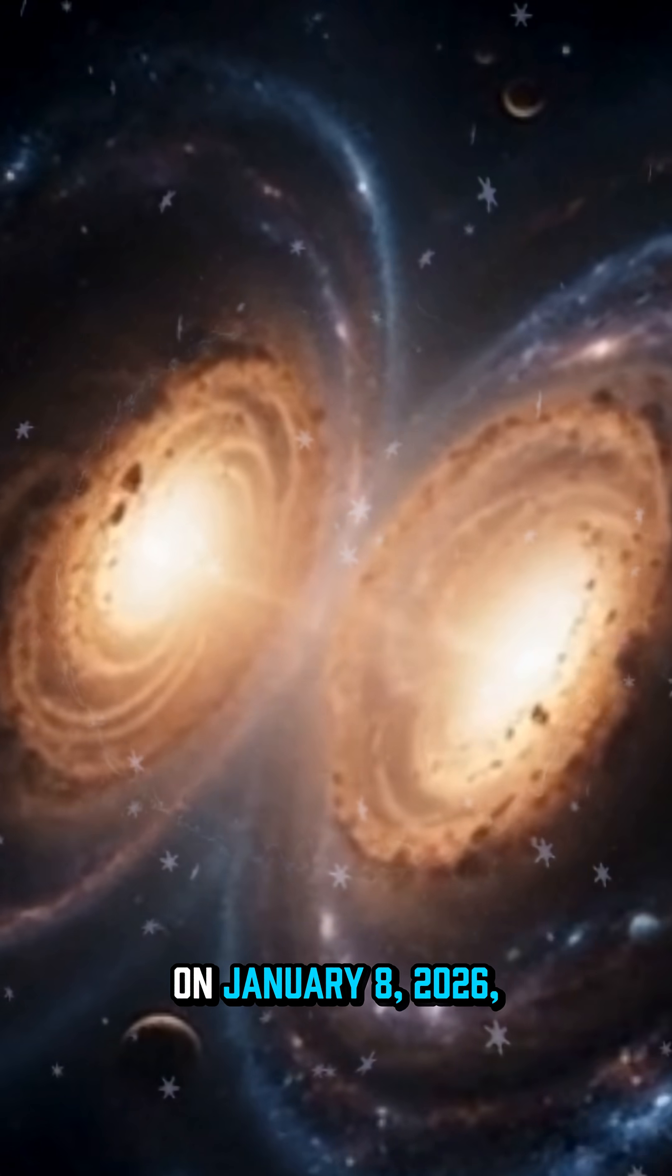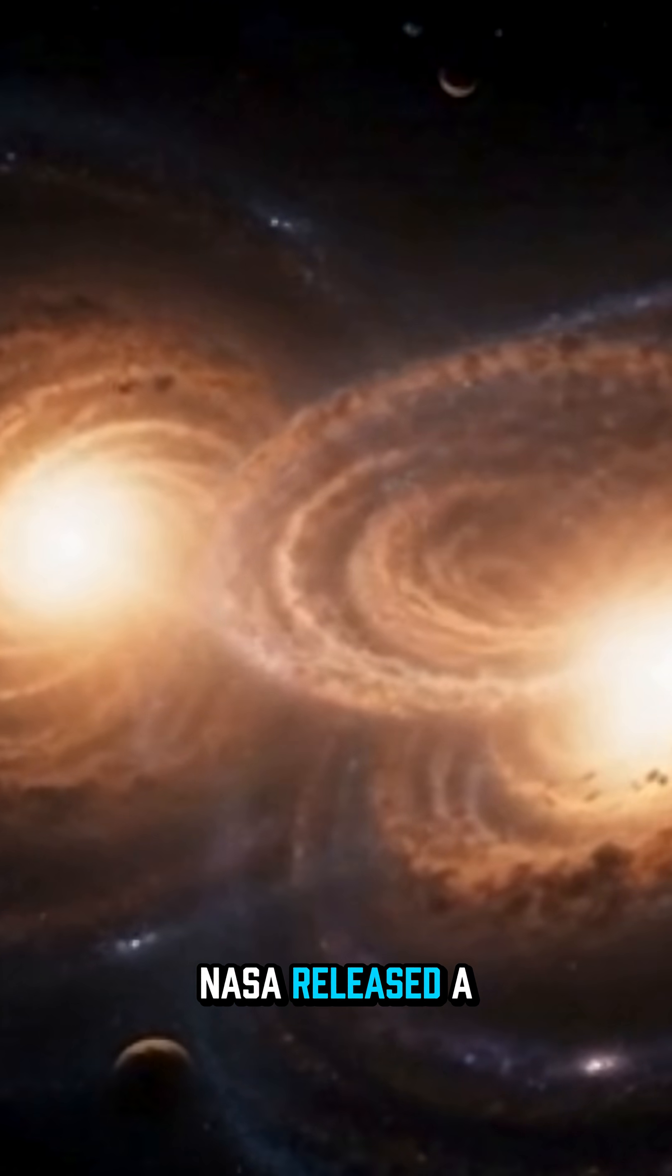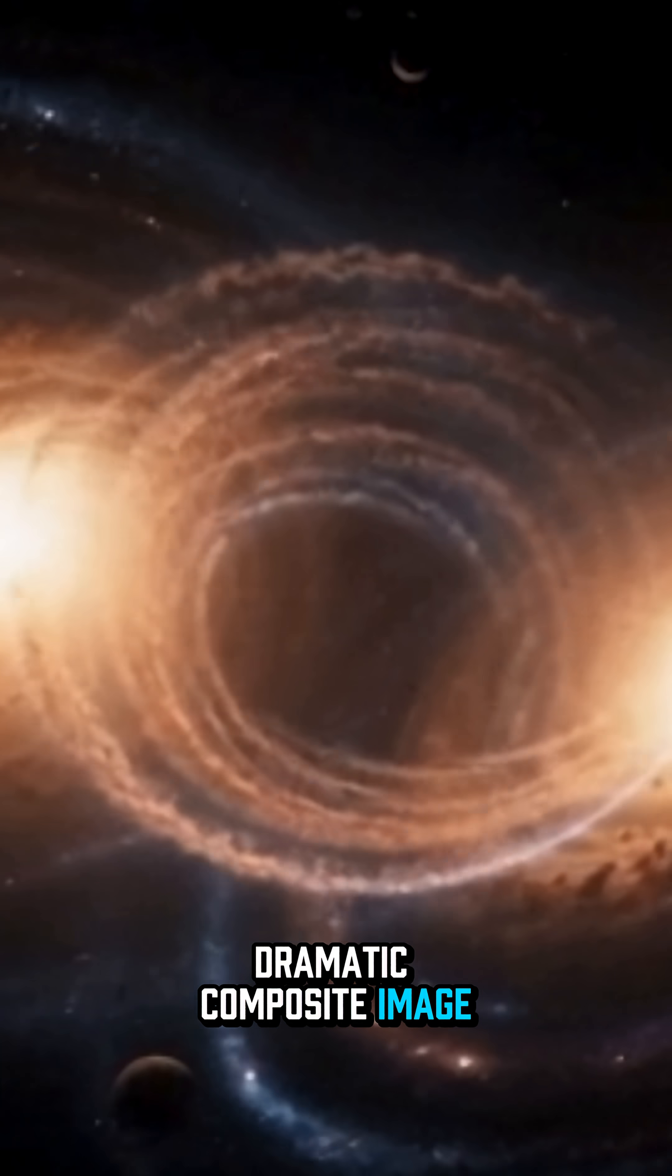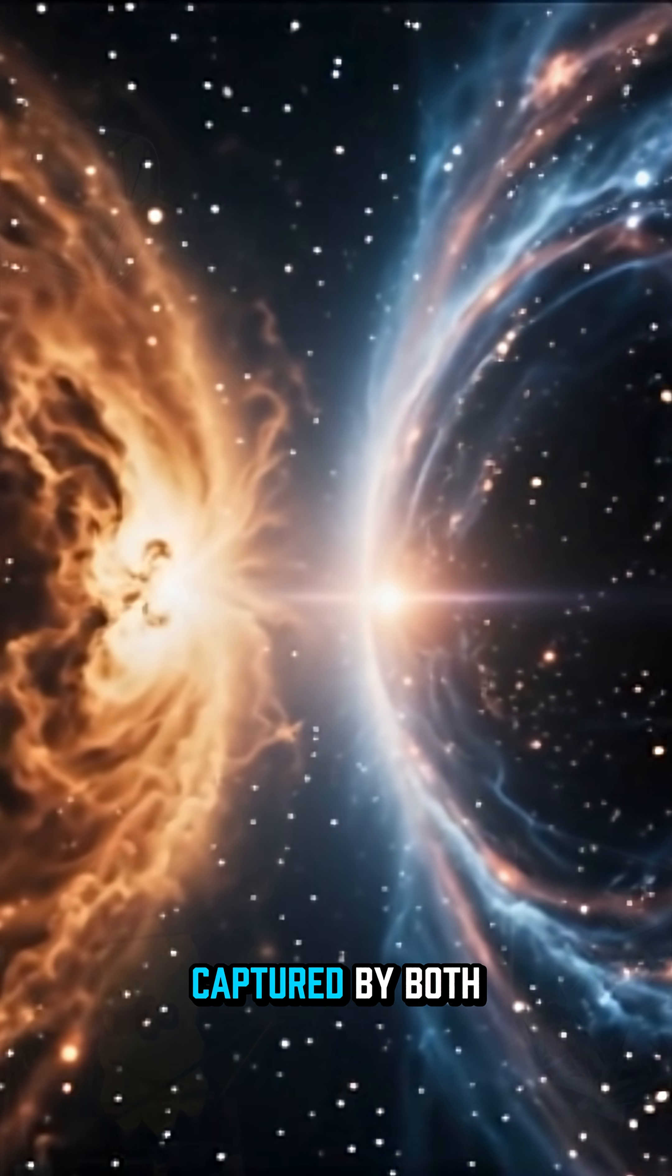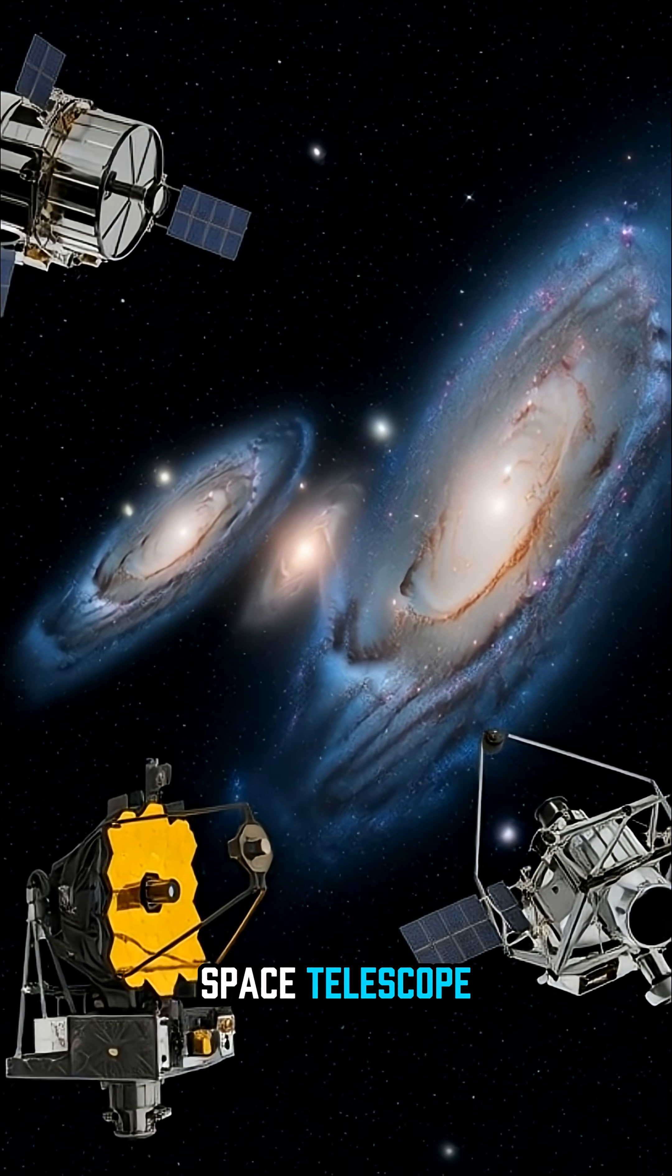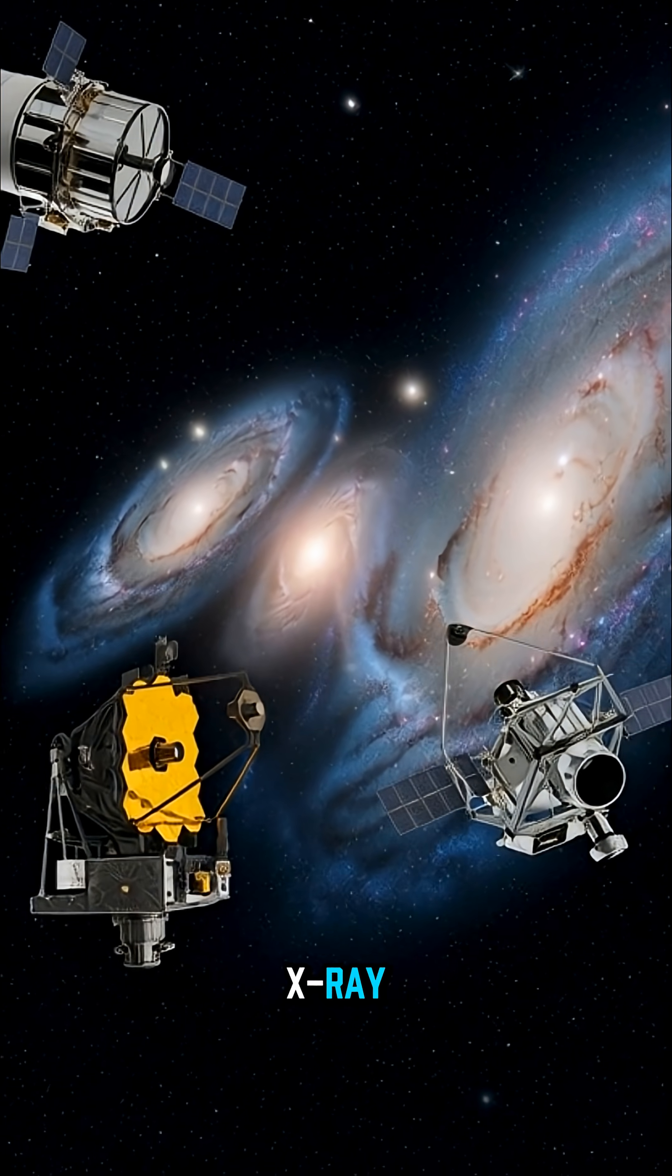On January 8, 2026, NASA released a dramatic composite image showing two spiral galaxies beginning a slow cosmic encounter captured by both the James Webb Space Telescope and the Chandra X-ray Observatory.